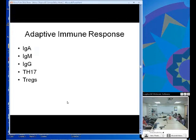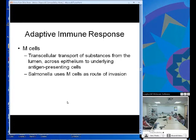That's all part of the innate immune response in the GI tract. The adaptive immune response - one of the key players is IgA. Some IgM is located there as well, and IgG. And we're just finding out a lot more about TH17 and Tregs.